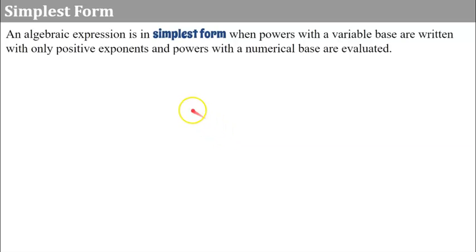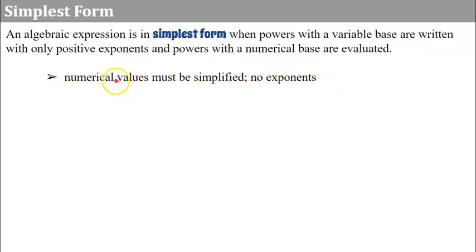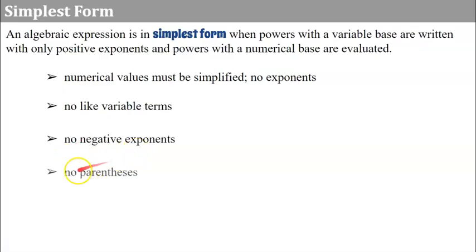When you're asked to simplify expressions, an algebraic expression is in simplest form when powers with a variable base are written with only positive exponents, and powers with a numerical base are evaluated. The rules are: numerical values must be simplified with no exponents, there should be no like variable terms, no negative exponents, and no parentheses. So when simplifying, we clear parentheses, clear negative exponents, combine like terms, and evaluate all numerical values.